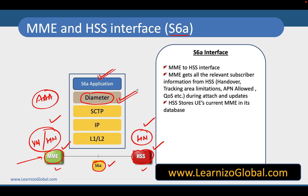So the S6a application runs between MME and HSS, carried over the Diameter protocol. MME gets all the information about the subscriber, including handover, tracking area limitations, APN allowed, quality of service, etc. HSS also stores the UE's current location as a particular MME in its database.